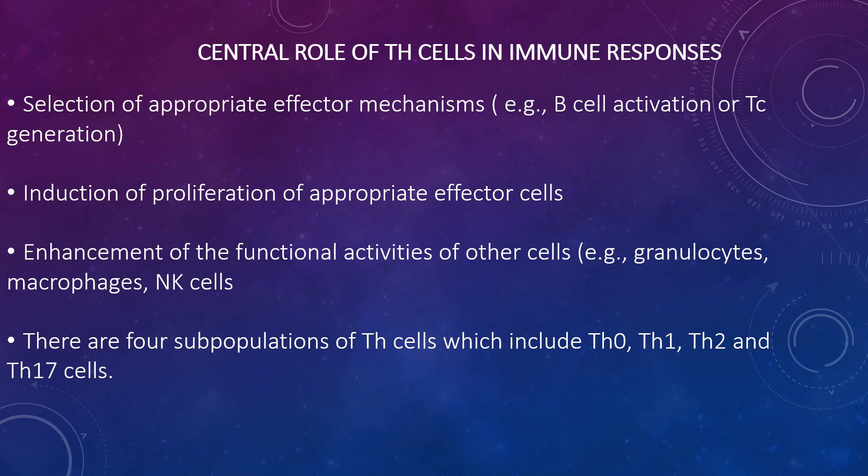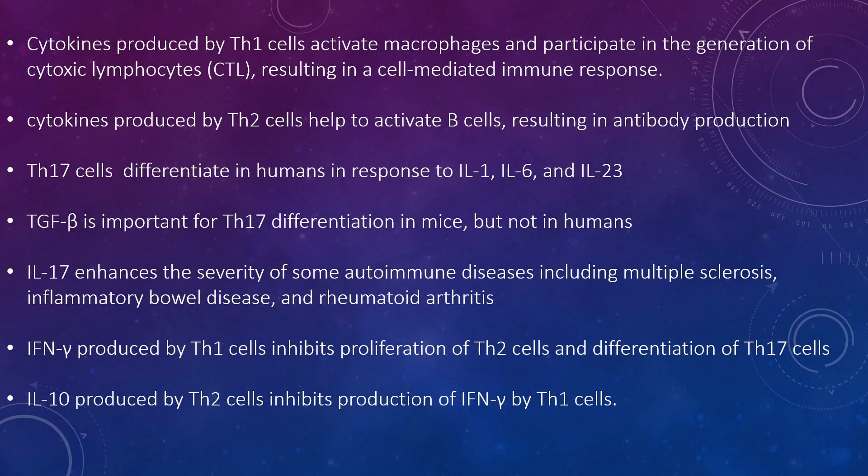Th1, Th2, and Th17 cells affect different cells and influence the type of immune response. Cytokines produced by Th1 cells activate macrophages and participate in the generation of cytotoxic lymphocytes, resulting in a cell-mediated immune response. In contrast, cytokines produced by Th2 cells help to activate B cells and stimulate antibody production. Th17 cells produce IL-17 in humans in response to IL-1, IL-6, and IL-23.